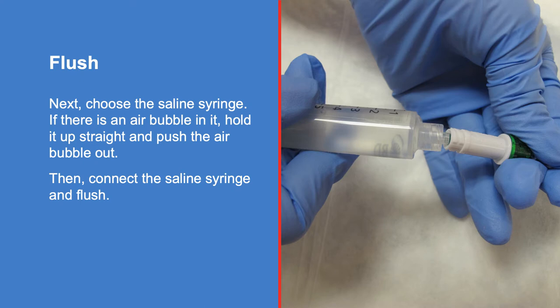Next, choose the saline syringe. If there is an air bubble in it, hold it up straight and push the air bubble out. Then connect the saline syringe and flush.